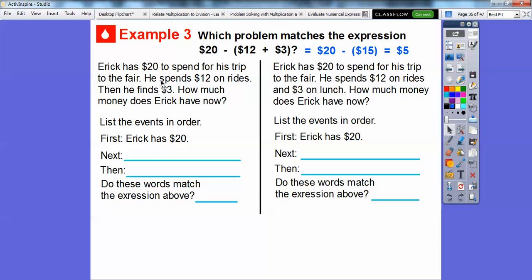Here, Eric has $20 to spend for his trip to the fair. He spends $12 on rides. Then he finds $3. How much money does Eric have? So list the events in order. He starts with $20. Then next he spends $12 on rides. So that would be a subtraction problem. So he has 20 minus 12 or $8 left. Then he finds the $3, so we're going to add that. So he has $8 plus $3. Does this match the problem? Does it match it up here? Nope, it sure doesn't, because it has to be $5. All right, so this one must do it. Let's check this one out.